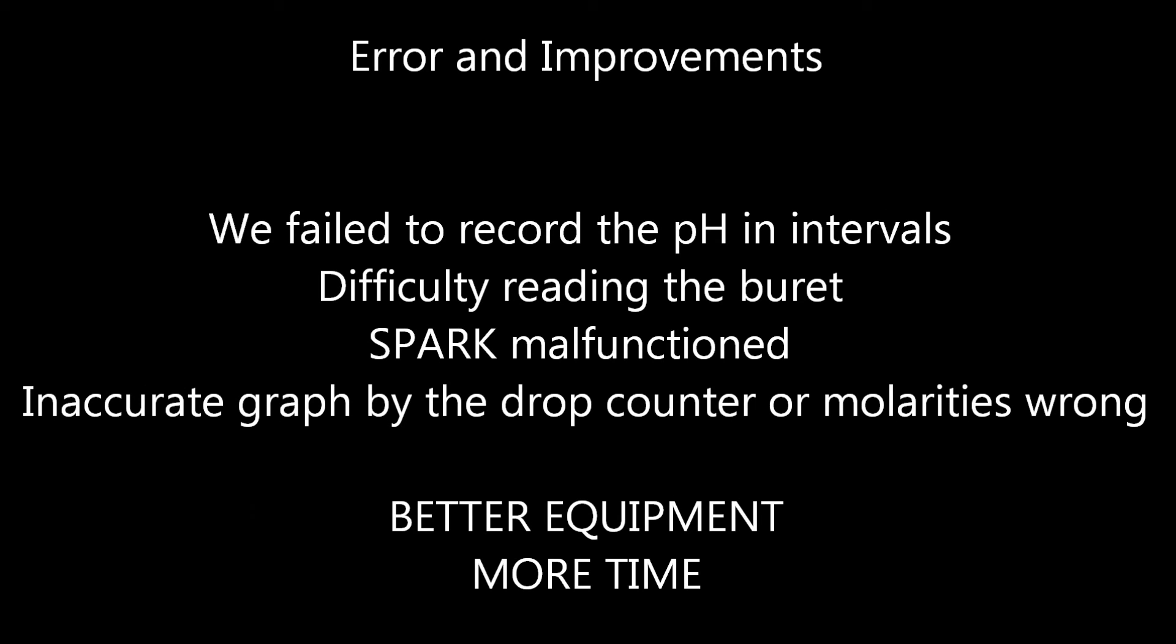Improvements and error analysis. We failed to record the pH in intervals at that point in time, since we assumed we'd have a graph from the SPARK. But our SPARK malfunctioned and accidentally led to our data being deleted. So we don't have the exact numbers, but we do have a graph that we took a picture of. In addition, our graph did not come out as accurate as we'd like it. Since we started out with 50 milliliters of 0.1 molar acetic acid, there should only be 50 milliliters of 0.1 molar NaOH needed to neutralize the reaction. So the equivalence should be at 50 milliliters. But the titration curve shows it around 32 milliliters. One thing we could have gotten wrong is that in the beginning we let out a stream of NaOH that may not have been picked up by the drop counter. Or it is possible that the molarities we were given were in actuality higher than usual, making the volume we needed less.